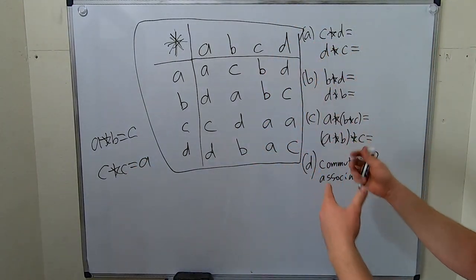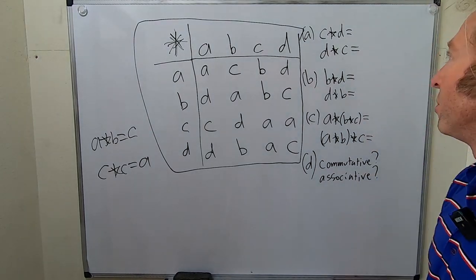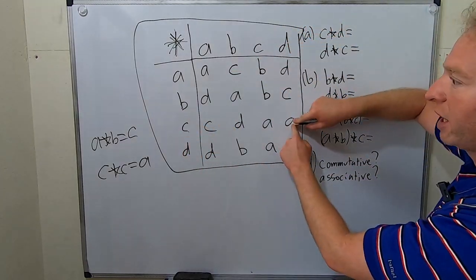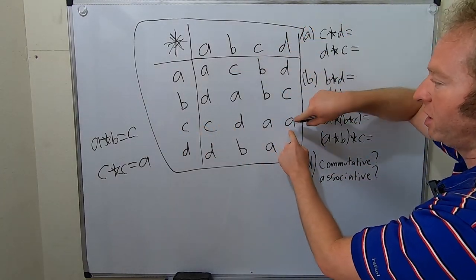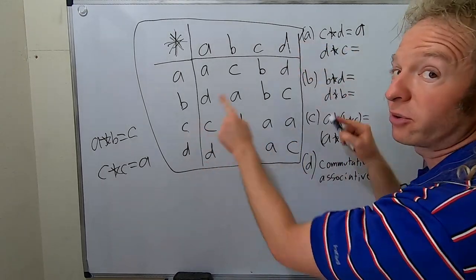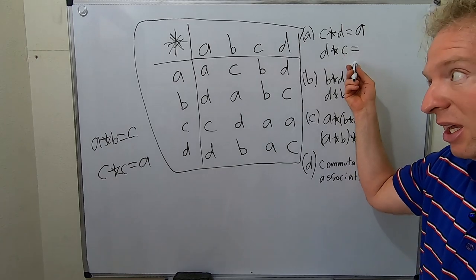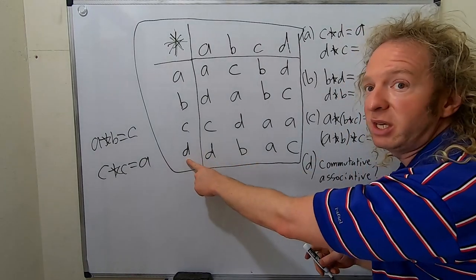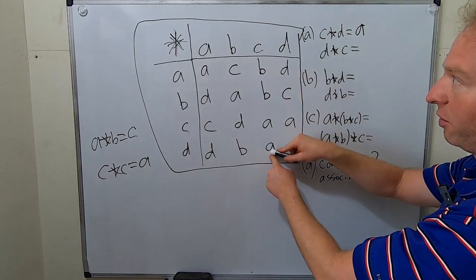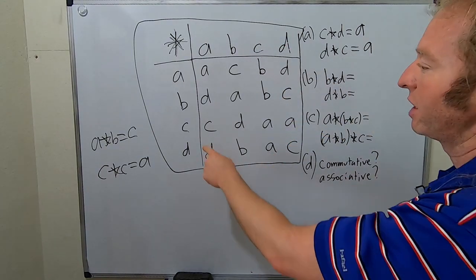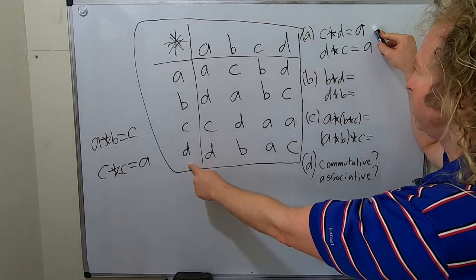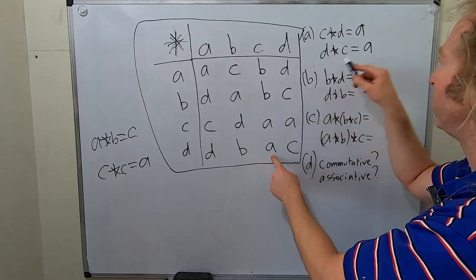The question has a couple of parts. First, c star d: you go to row c, column d, and that equals a. Then d star c: you go to row d, column c, and that is also a. So c star d equals a and d star c also equals a — they're both equal to a in this case.